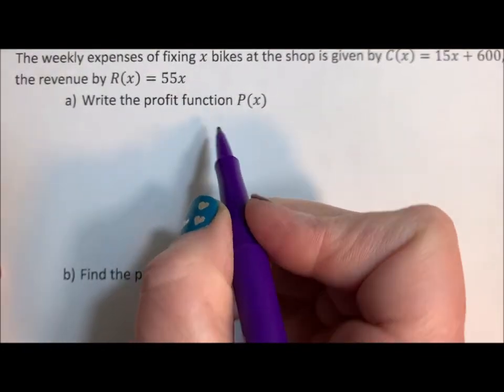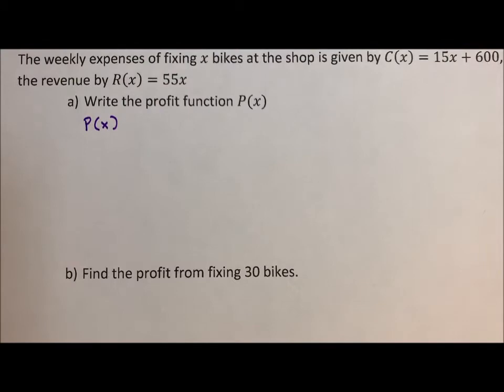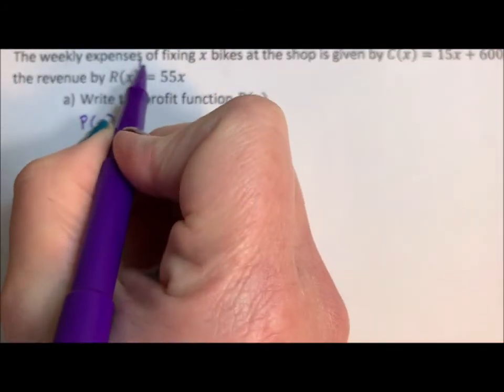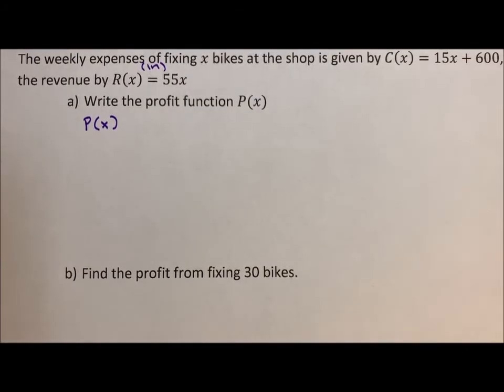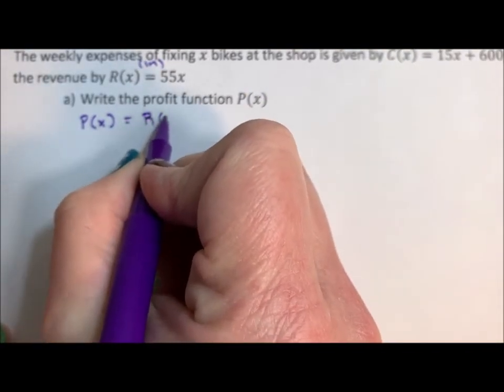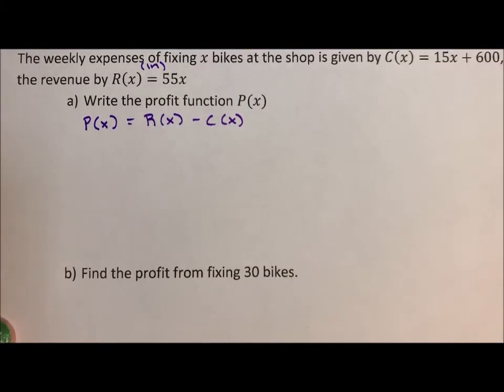It says write the profit function. So profit - now just remember, at the end of the day we want to make money. Cost is the money out. Revenue is the money in. At the end of the day, we want more money in than money out. If there's more money out than coming in, it's a bad business plan, we are going to go under.